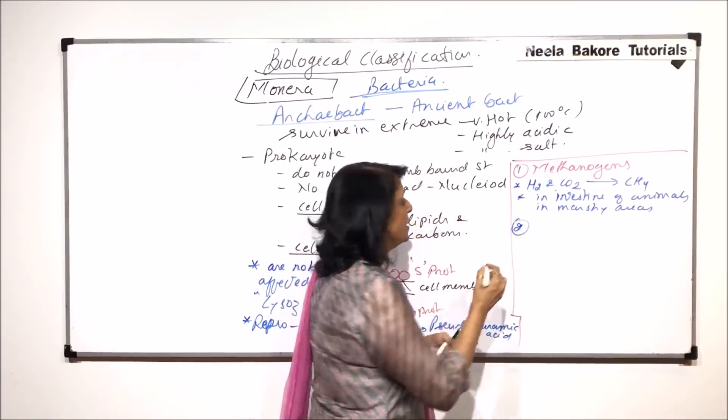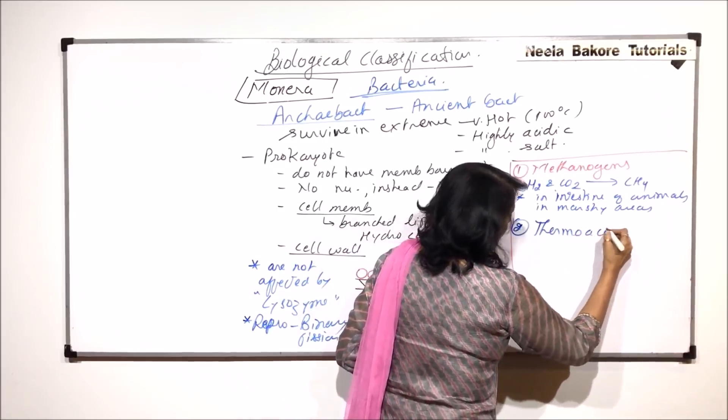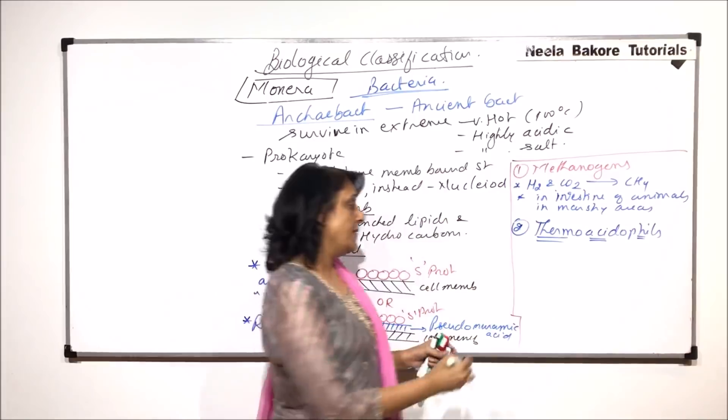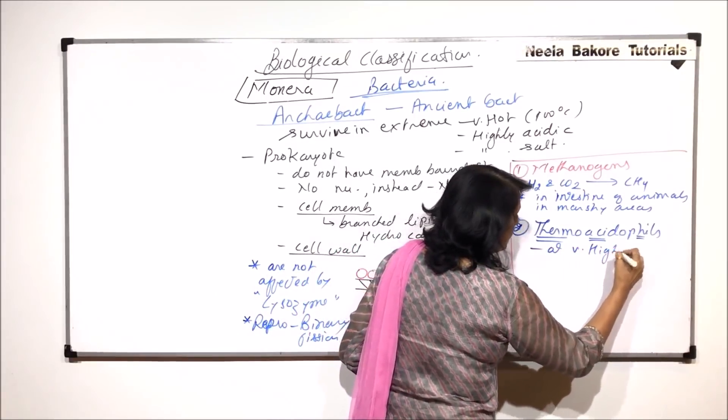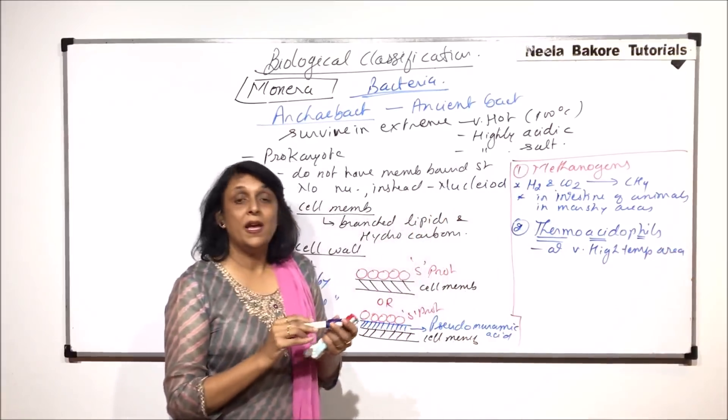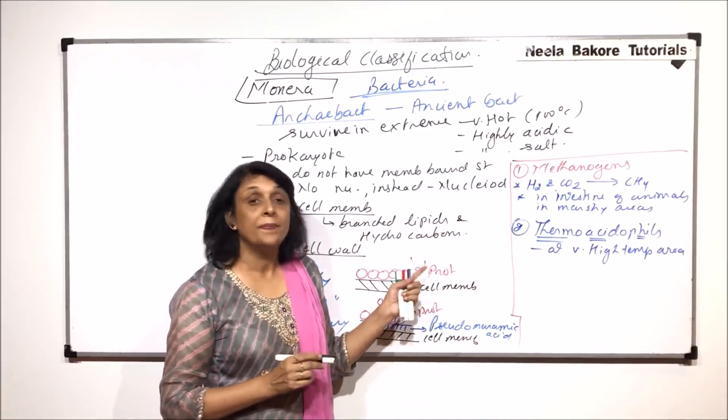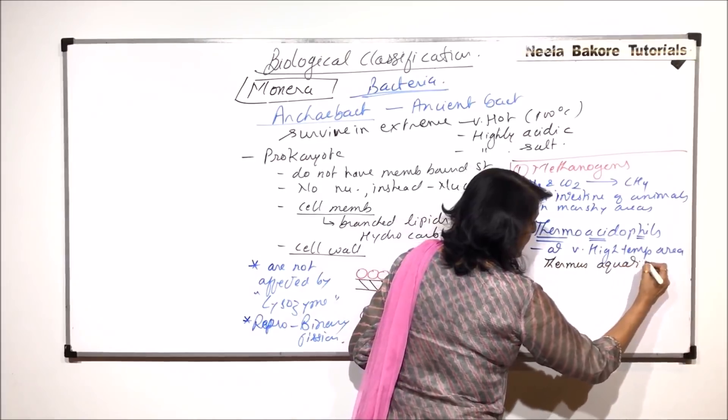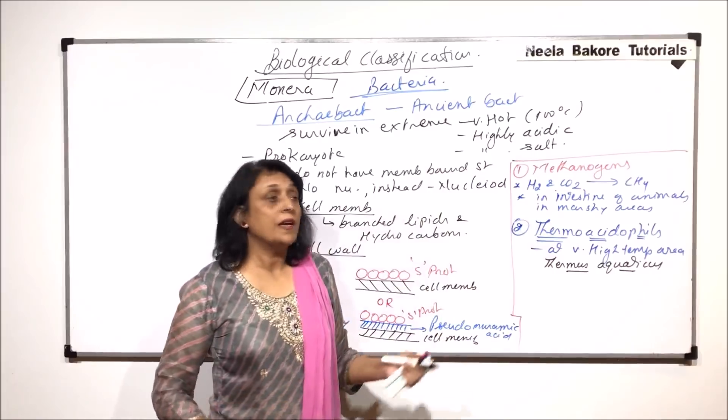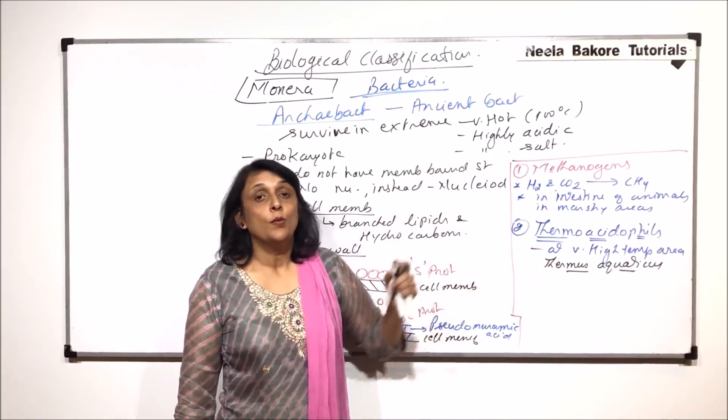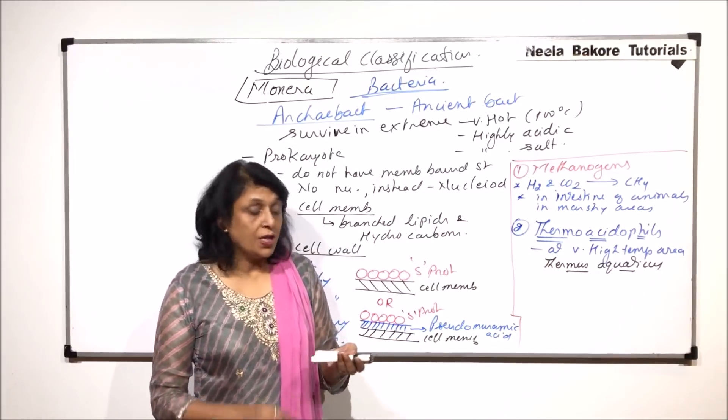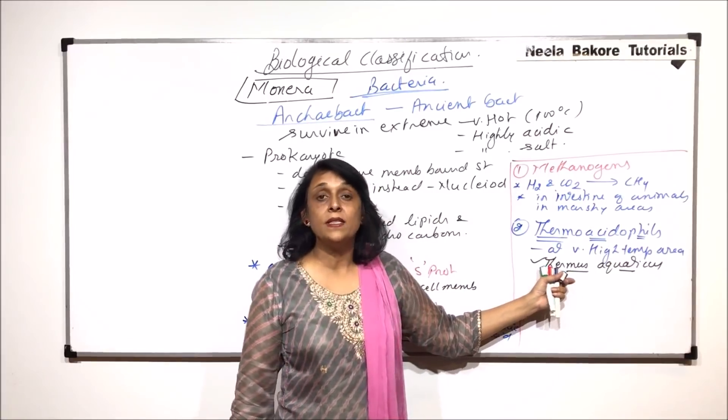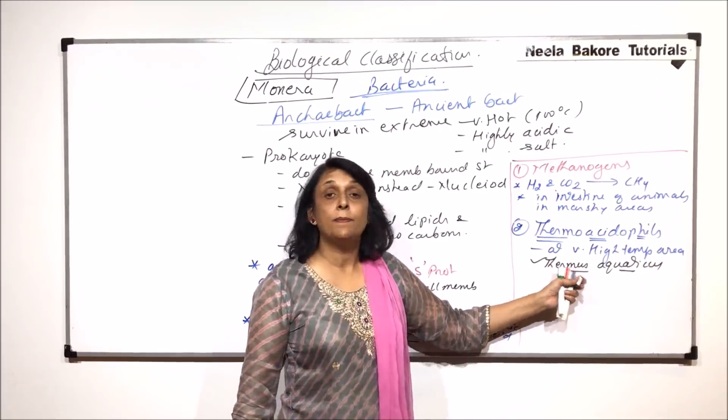The second type of archebacterians, they are known as thermoacidophils. Thermo is for temperature, acido is for acid, and phil is for loving. That means they are found at very high temperature areas. That means it could be a hot water spring near volcanic areas. And we know one such thermophilus bacterium. Its name is Thermus aquaticus. And this is the bacterium from which we isolate a very special enzyme called TAC polymerase, which we use for polymerase chain reaction in biotechnology or genetic engineering. So why we want that enzyme from this particular bacterium is the steps in polymerase chain reaction or PCR, they take place at very high temperature.